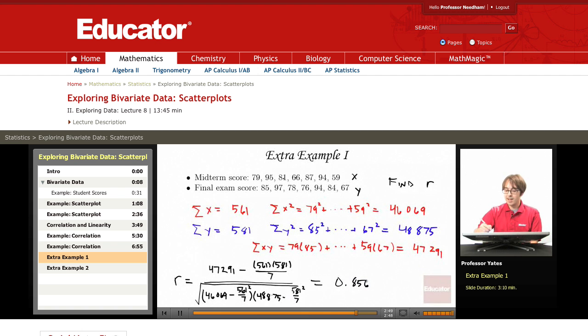So this is a strong linear positive relationship between the two variables. So if you did well on your midterm score, you're probably going to do well on your final score.